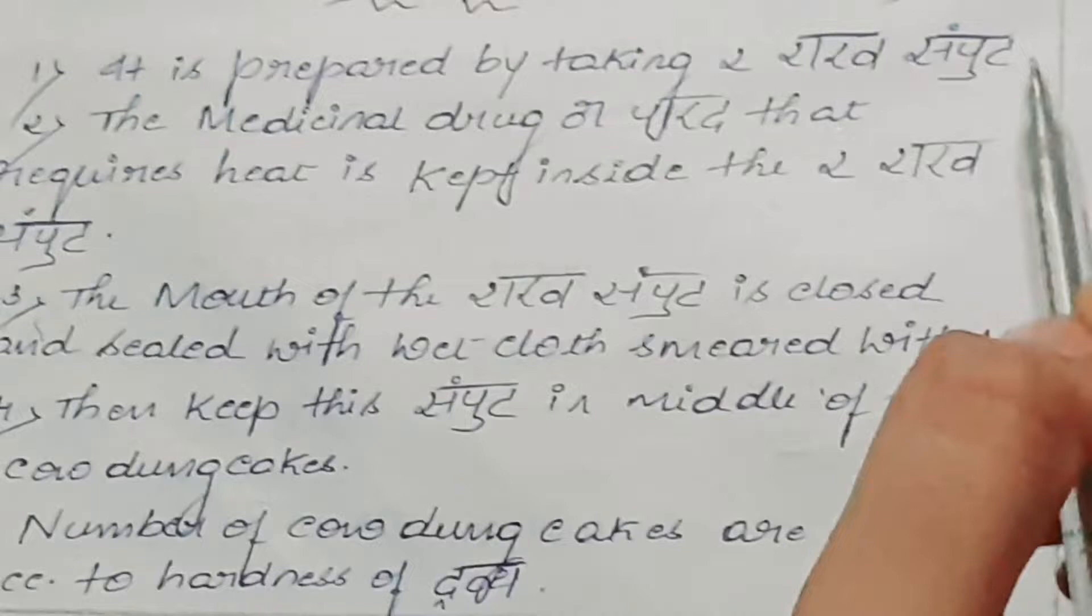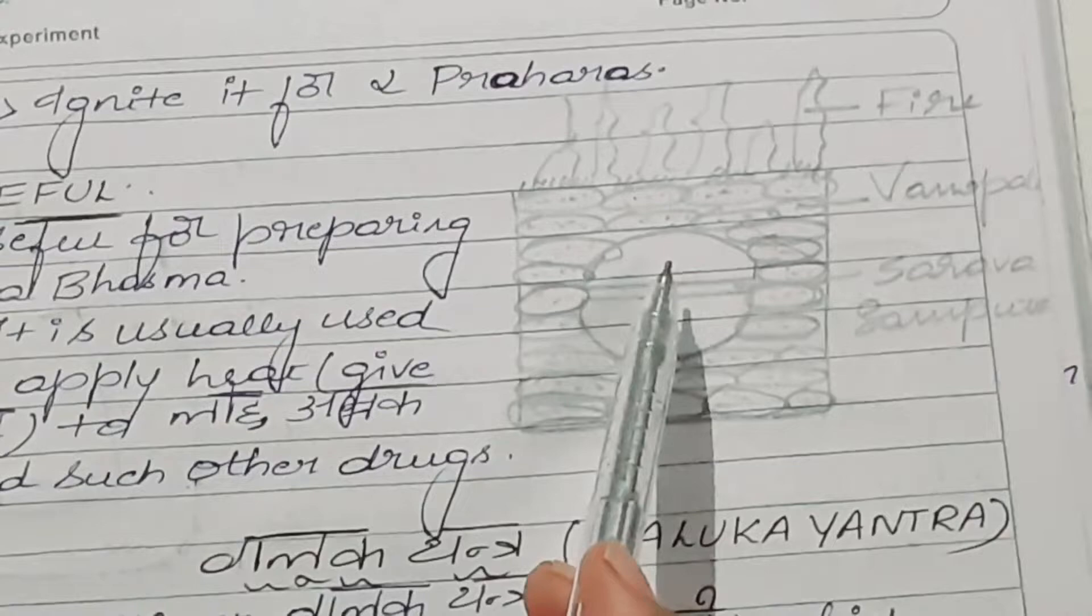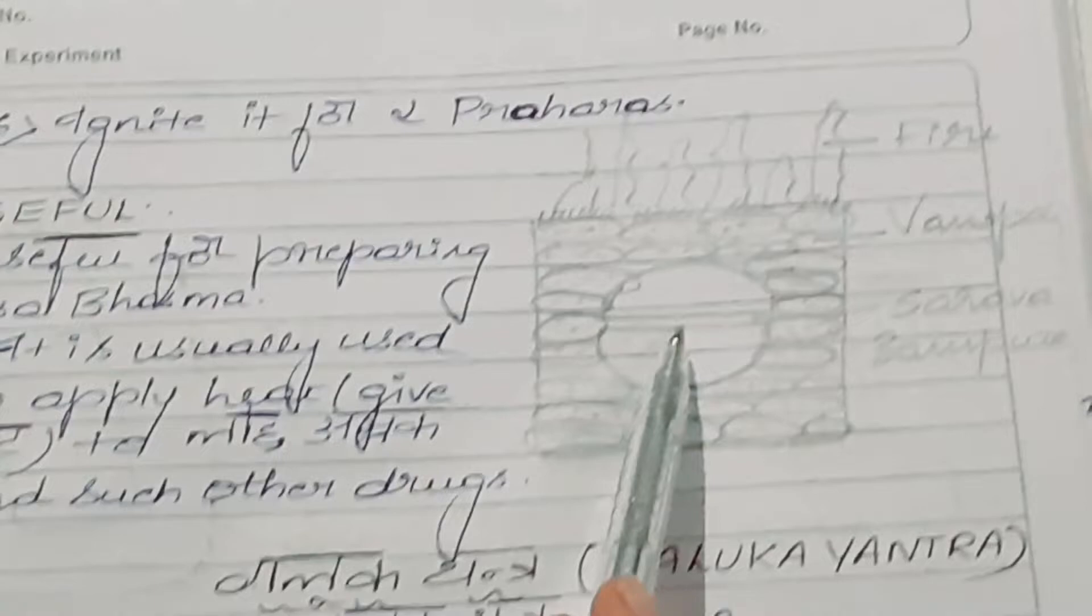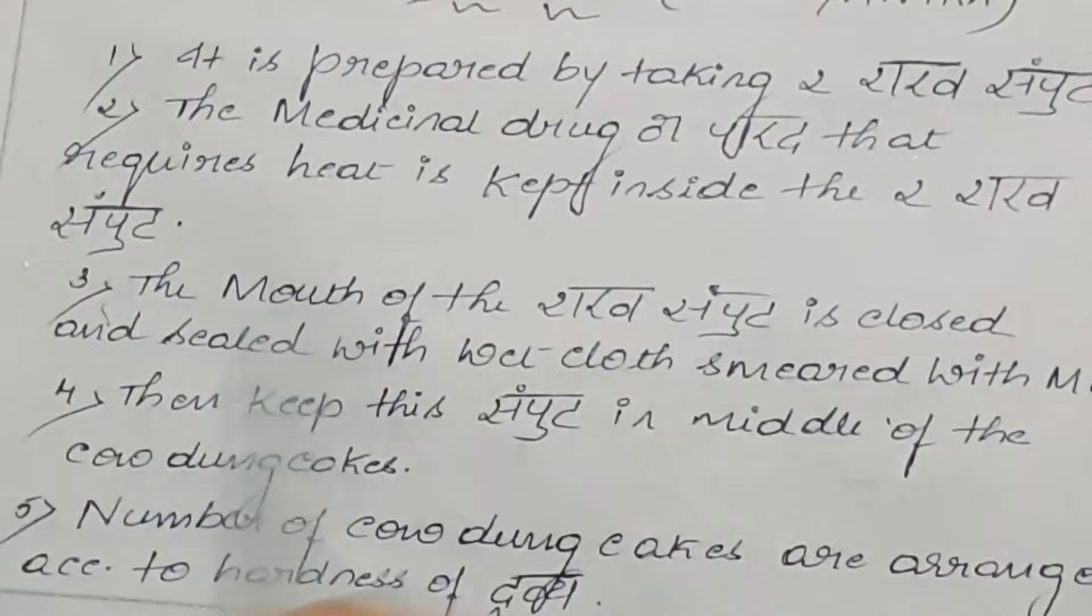The mouth of the sharava samputta is closed and sealed with the wet cloth smeared with the mud. Here we can see a sharava samputta is taken, then the medicinal drug which requires heat is kept inside the sharava samputta, and it is sealed with the wet mud cloth.